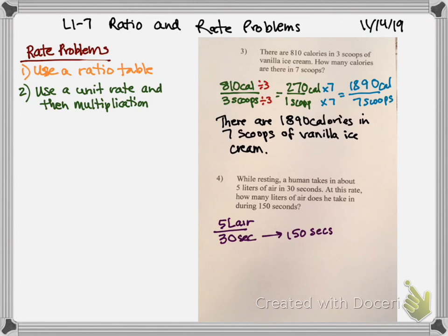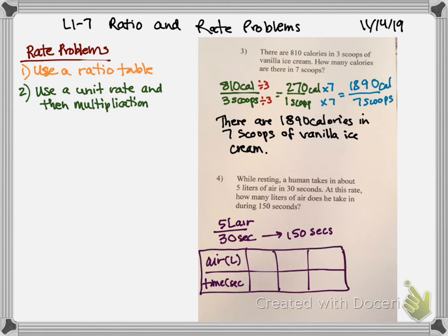I'm going to use a ratio table this time. So I'm going to say air is measured in liters. Time measured in seconds. And let's see, so we have 5 over 30, and we want it to get 150. That's simple. If I just multiply 30 by 5, I get that. So if I multiply him by 5, I'll get the number I need. That was easy. All right, so my answer to this one is,